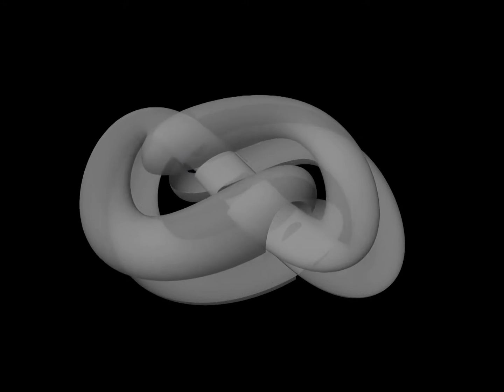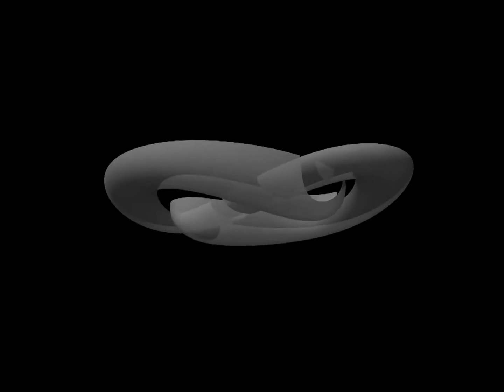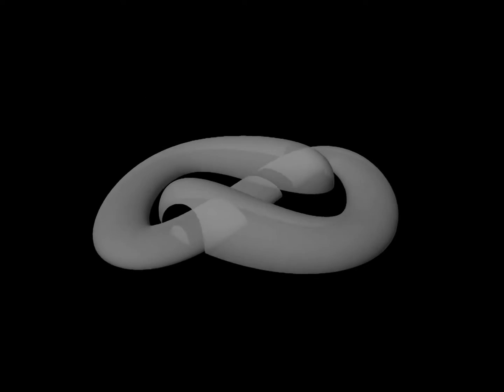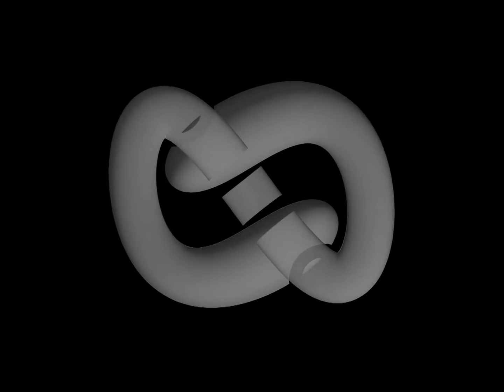There are pieces of surface that we cannot see since they are inside the tube. But the surface is symmetric. So we can cut it in half and see also the pieces inside.